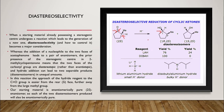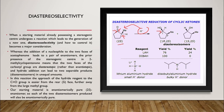In this reaction, the approach of the hydride reagent to the carbonyl group is easier from the rear, that is, the si-face, further away from the larger methyl group. The starting material is enantiomerically pure, so each of the two diastereomers produced will be enantiomerically pure.